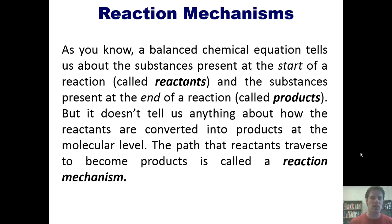As you know, a balanced chemical equation tells us about the substances present at the start of a reaction, which are called reactants, and the substances present at the end of a reaction, which are called products. But it doesn't tell us anything about how the reactants are converted into the products at a molecular level. The path that reactants traverse to become products is called a reaction's mechanism.